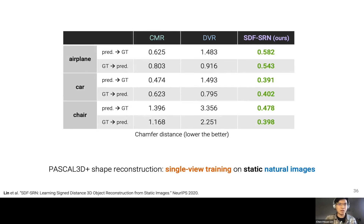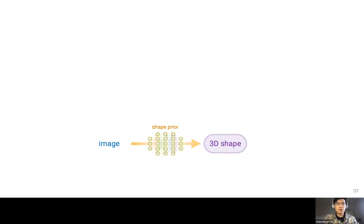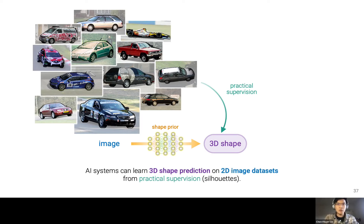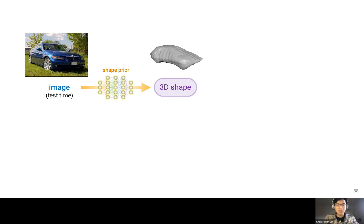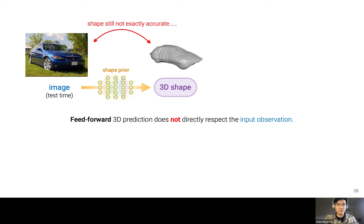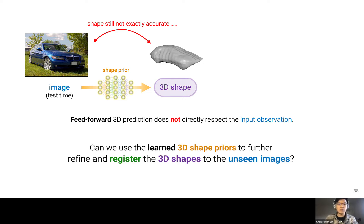Our method quantitatively outperforms the baseline methods for real-world images in all aspects. We can learn single-view 3D shape reconstruction from image datasets with practical supervision. However, if we take a closer look at the results, shape predictions don't always match what we'd expect from the images. Shape predictions using feed-forward networks don't directly respect input observations, and there will always be some prediction errors — a common phenomenon for all machine learning models. So we want to leverage learned shape priors to further refine and register shape predictions to unseen images at test time.